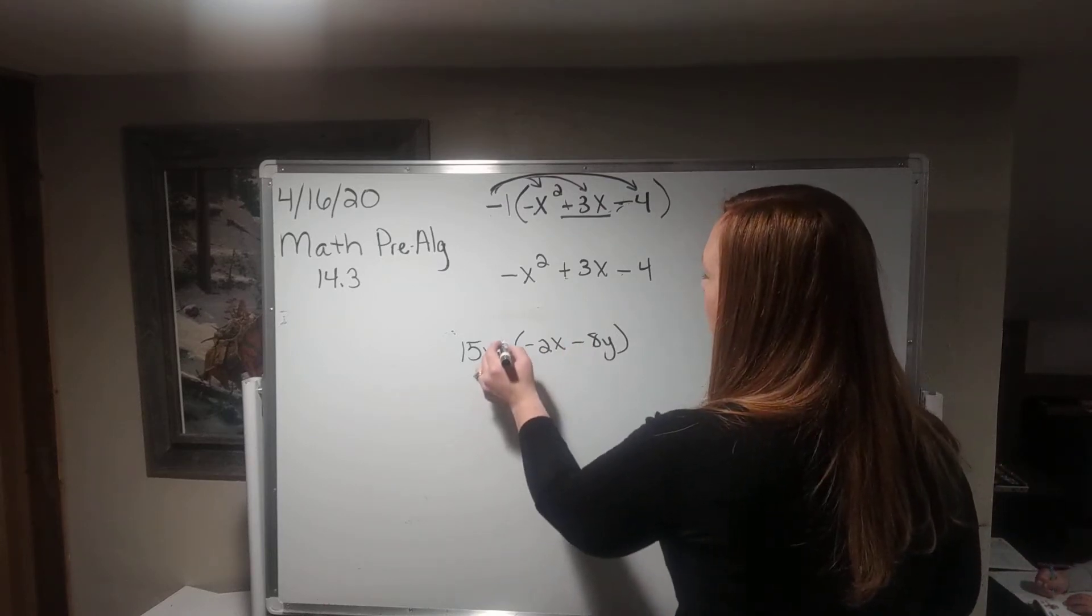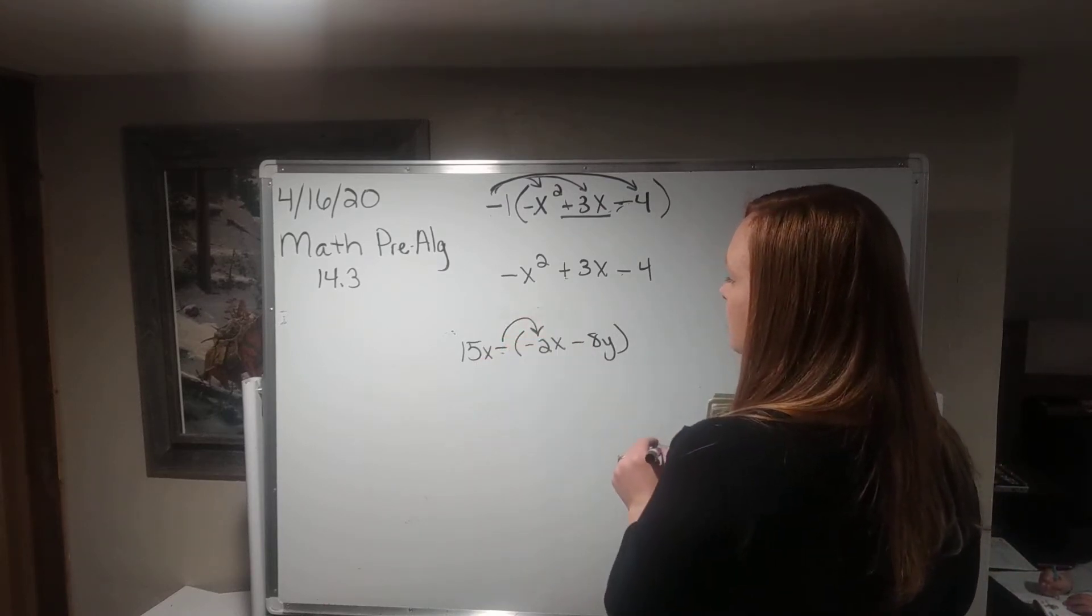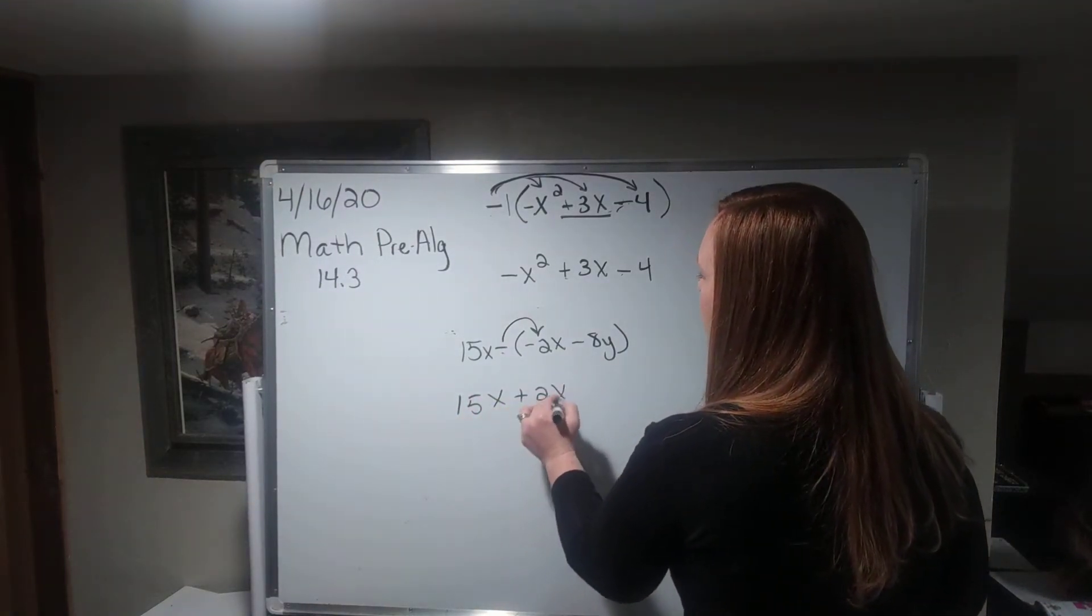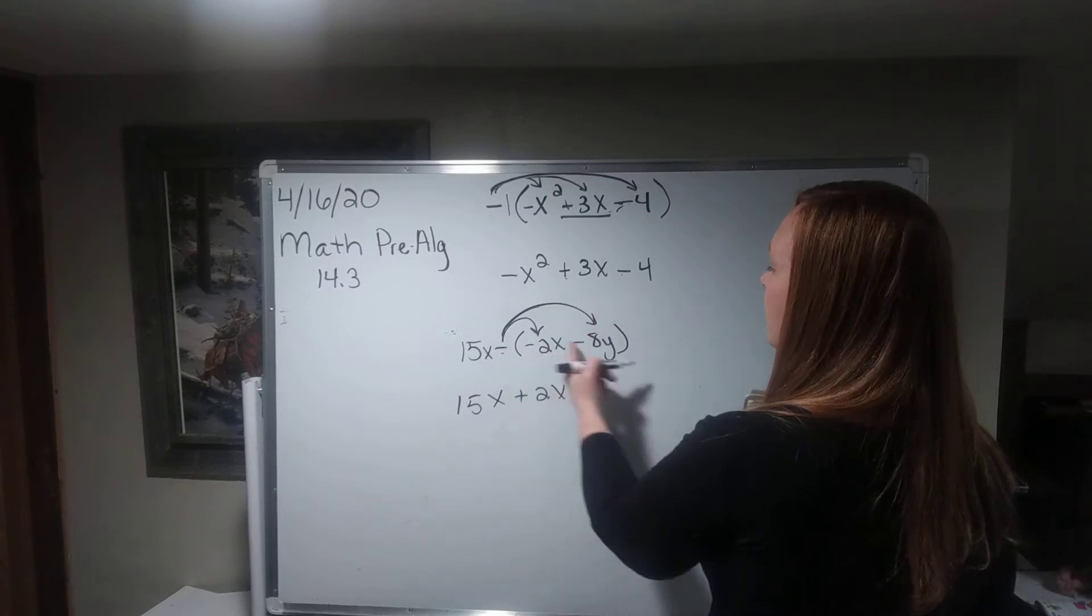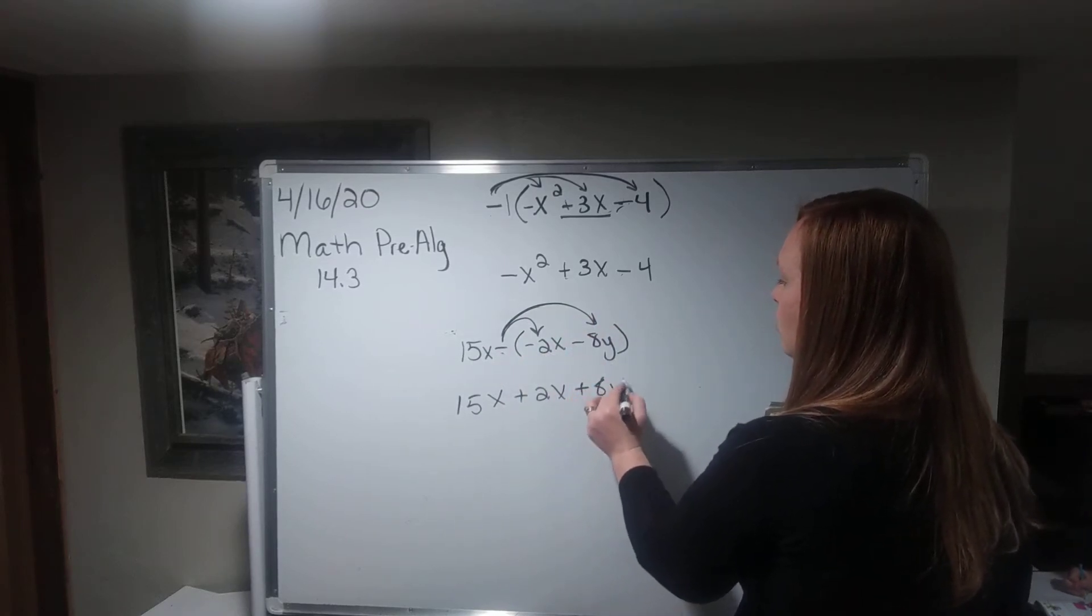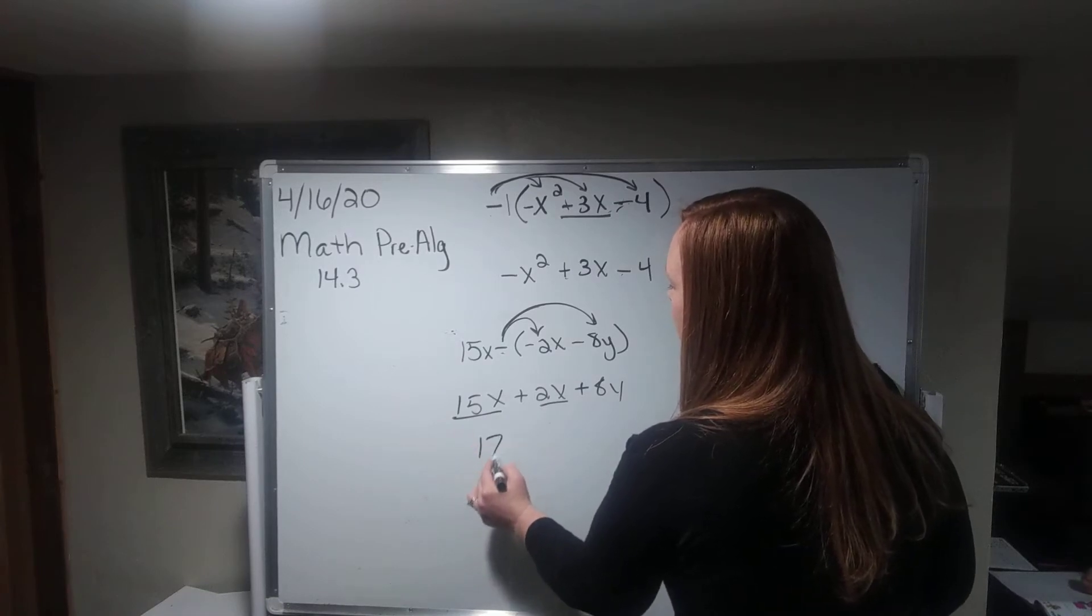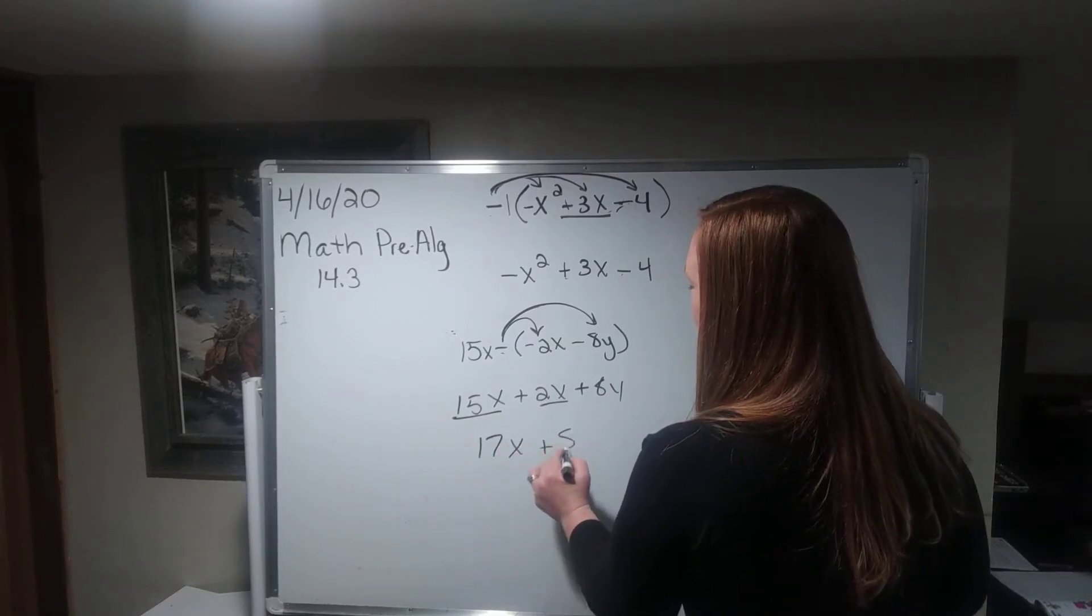Okay, so I can distribute it if that makes sense to you. So we can do 15x plus 2x, and then two negatives make a positive plus 8y. And then we can combine like terms, so we get 17x plus 8y.